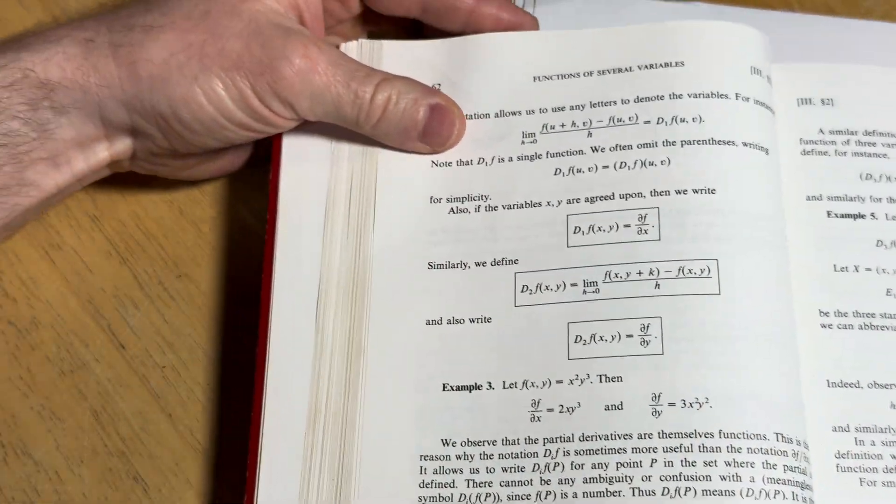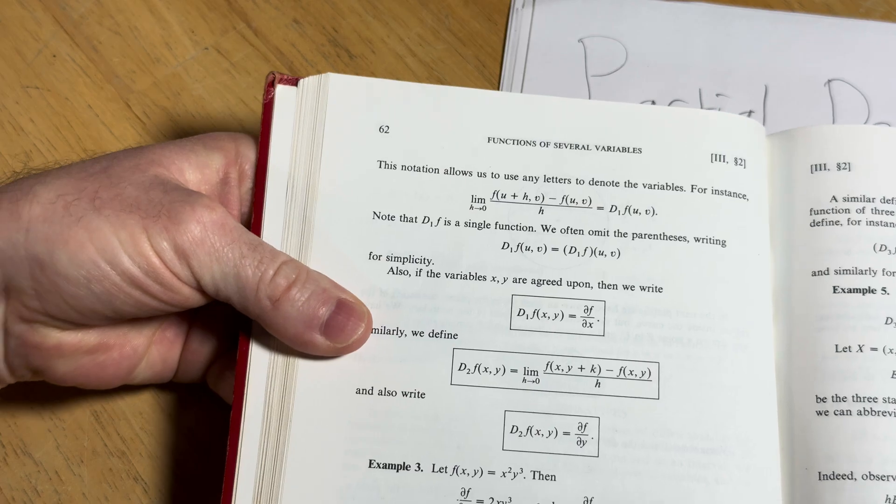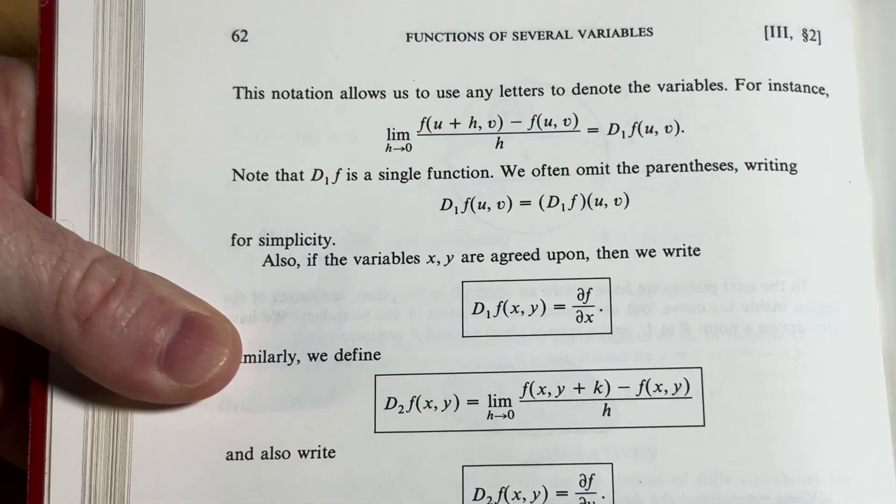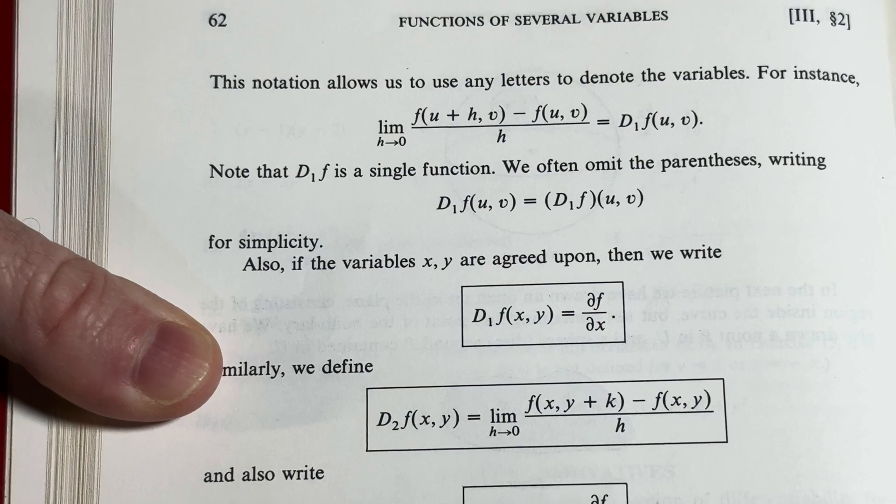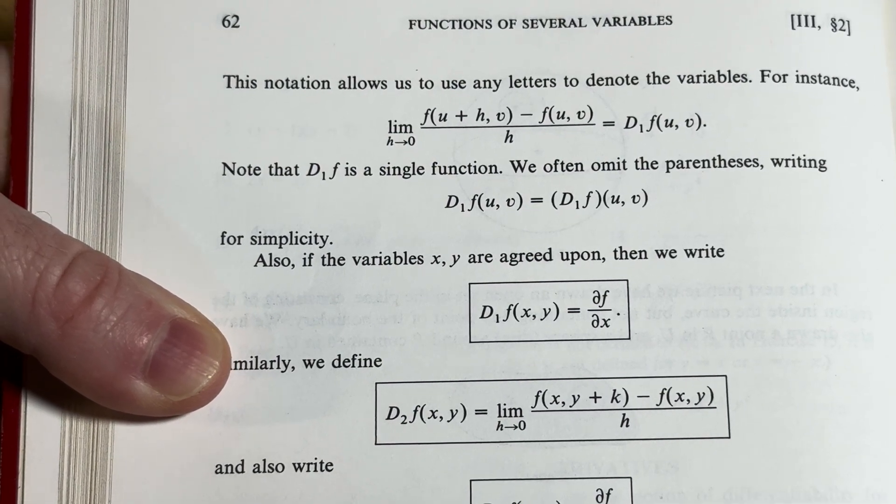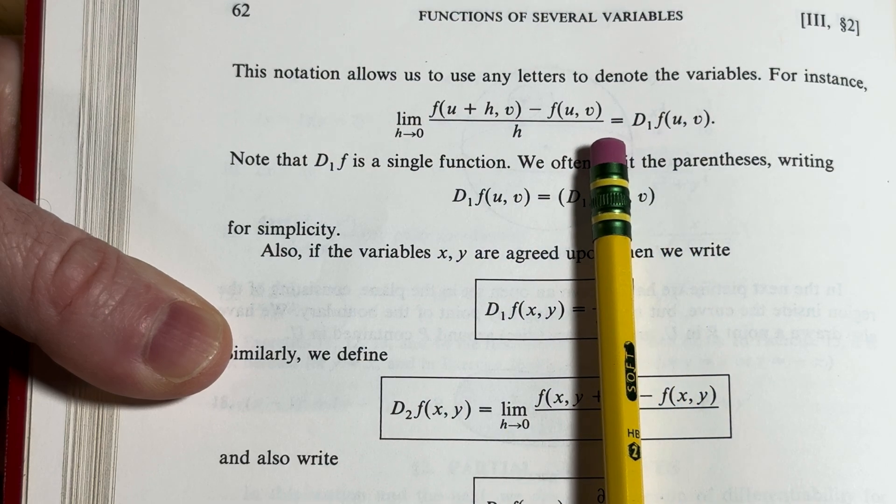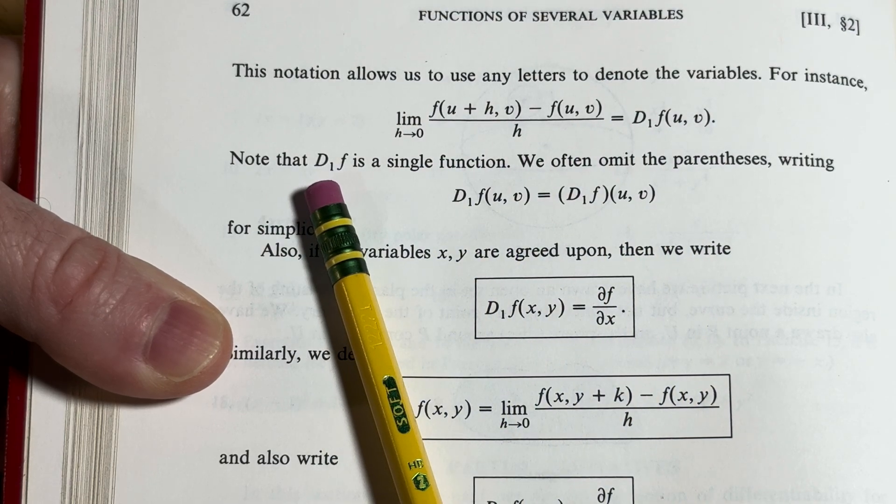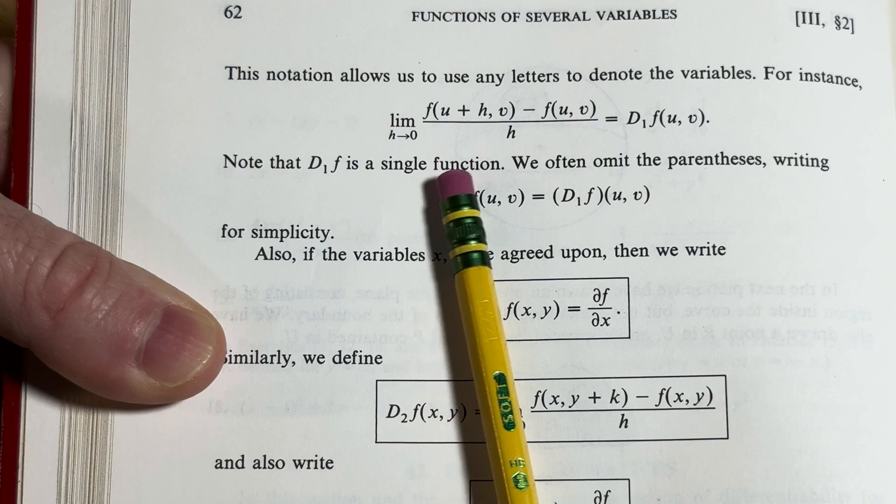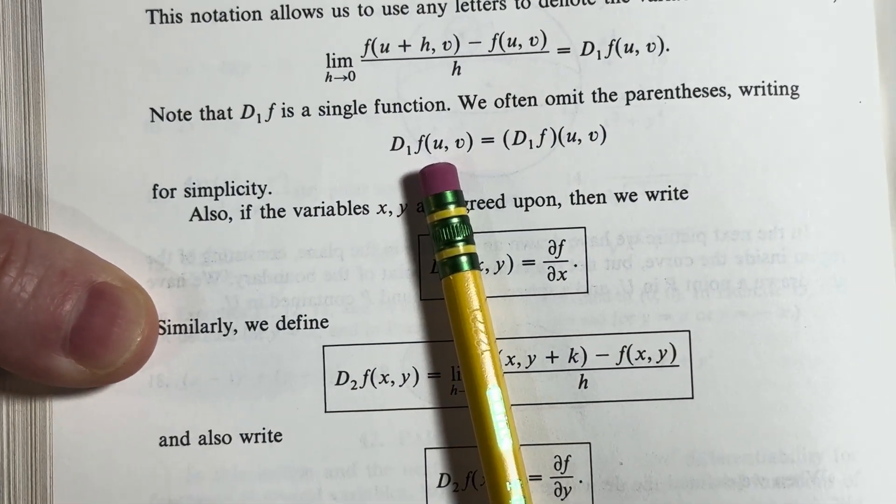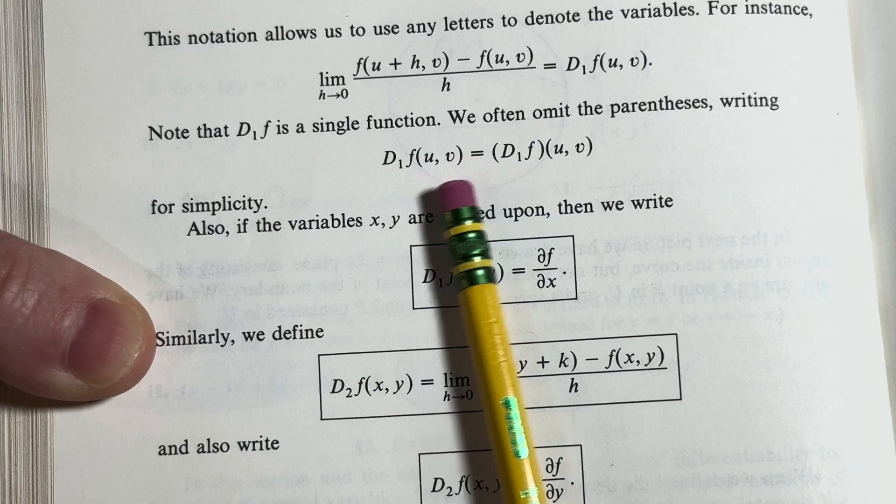So let's keep reading here. Let's give just some more information. It says here, the notation allows us to use any letters to denote the variables. For instance, you can use u and v here. Note that the d1f is a single function. We often omit the parentheses writing it like this. Okay. For simplicity.